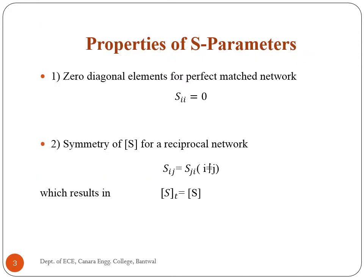Properties of S-Parameters. The first property is zero diagonal elements for a perfect match network. For an ideal network with matched termination, S_ii equals zero since there is no reflection from any port. Therefore, under perfect match conditions, the diagonal elements of the S matrix are zero.